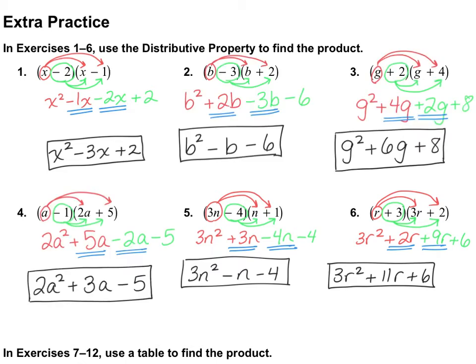For number 2, I got b squared minus b minus 6. For number 3, g squared plus 6g plus 8. And for number 4, 2a squared plus 3a minus 5. If you made any mistakes, see if you can find them.